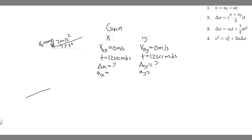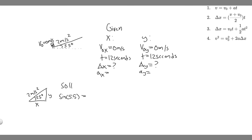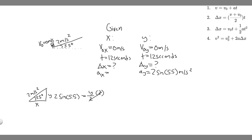To find the components, imagine the acceleration as the hypotenuse of a triangle at 5.5 degrees. For the y component, sine of 5.5 equals opposite over hypotenuse, which is aᵧ over 2. Multiply both sides by 2: aᵧ = 2 times the sine of 5.5 meters per second squared. For the x component, cosine of 5.5 equals adjacent over hypotenuse, which is aₓ over 2, so aₓ = 2 times the cosine of 5.5 meters per second squared.